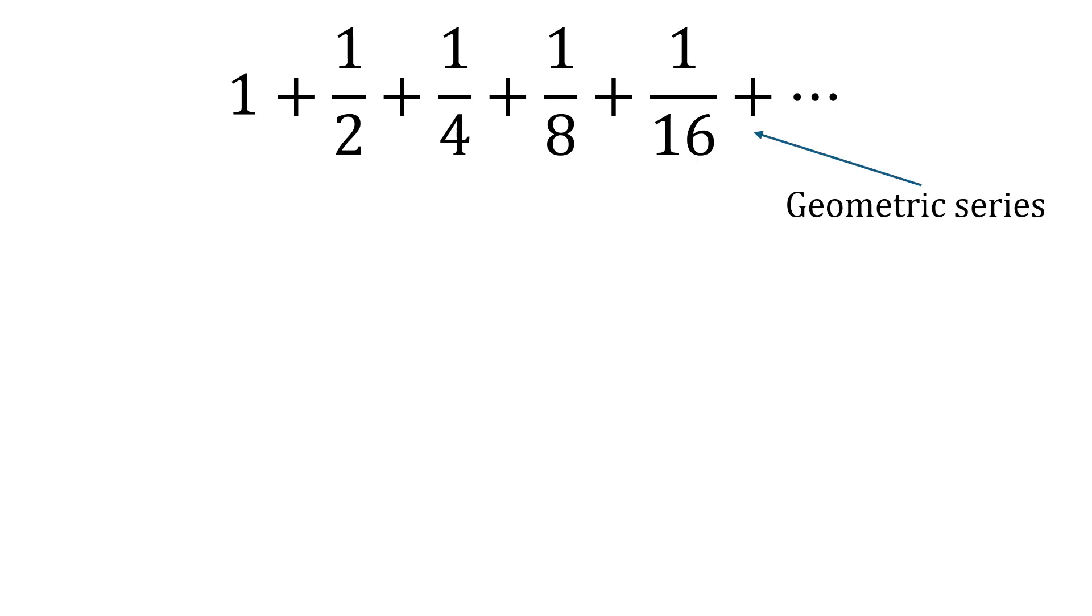It's called geometric because each time we move from one number to the next one, we are multiplying by the same ratio to do that. So in this example, we're multiplying by a half to get from one to a half, multiplying by a half again to get to a quarter and so on and so on forever.